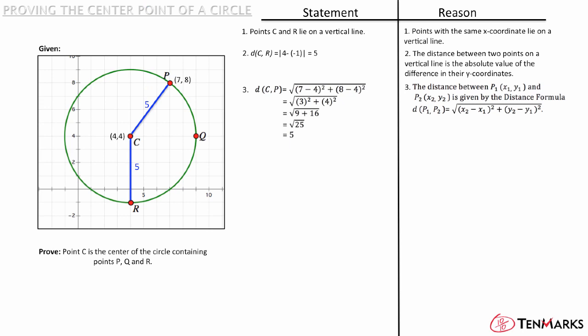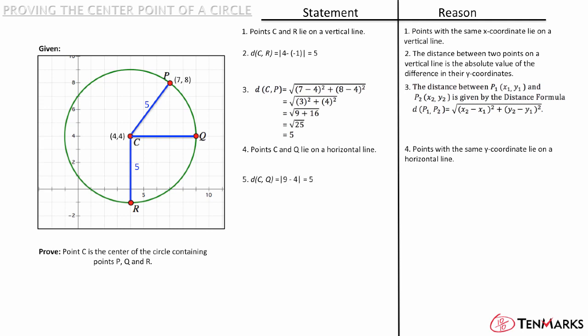The last point is point Q. How can you find the distance from point C to point Q? Notice they lie on the same horizontal line because they have the same y-values. This means you can find the distance by taking the absolute value of the x-values. You could also use the distance formula if you want to — they will both give you the same answer. So the absolute value of 9 minus 4 is 5, which means that the distance from C to Q is 5, because the distance between two points on a horizontal line is the absolute value of the difference in their x-coordinates.